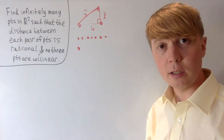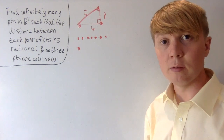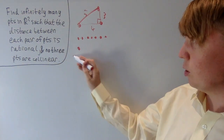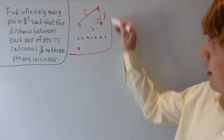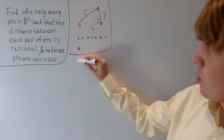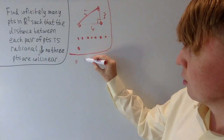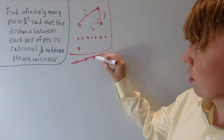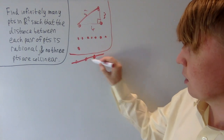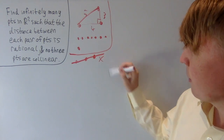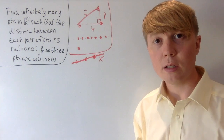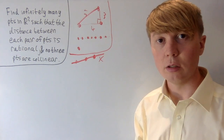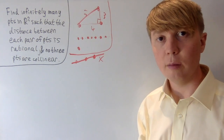We're going to look at a slightly more difficult version of this problem, where no 3 points are allowed to lie on the same straight line — so we're not allowed to have any 3 points which are collinear. There's a really beautiful way of doing this, actually just using the unit circle and some trigonometry.